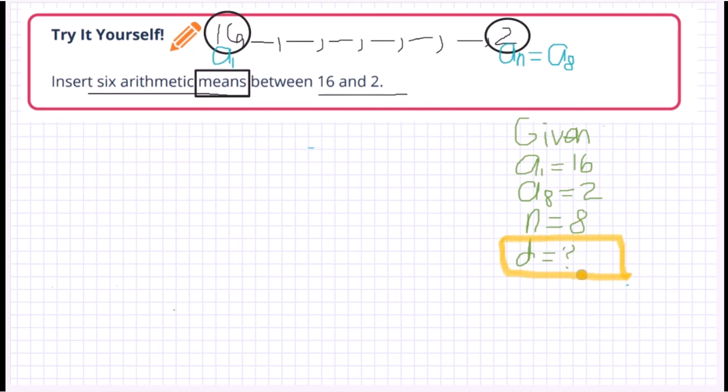But we will be using a different way from the previous video. In the previous video we used the general term of the arithmetic sequence but this time we will be using another technique, another way. This is based on the formula of the distance or the common difference rather. We will just represent the given with a certain value or a certain variable. So we will let sixteen be our x.